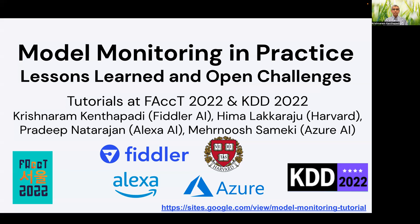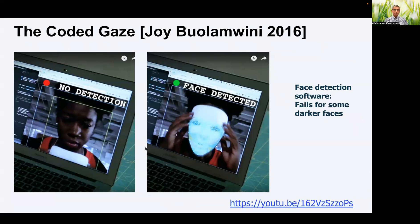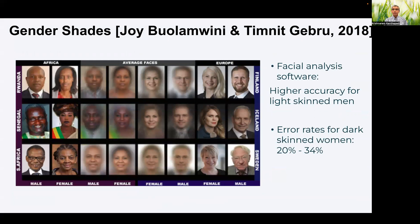Let's start with understanding why we need machine learning model monitoring. Over the last several years, we have observed a variety of instances where machine learning models have not behaved as they were intended. For instance, back in around 2016, Joy Buolamwini observed that facial detection softwares often did not detect her own face. These softwares tended to work well for light-skinned faces, but often failed for darker faces. Perhaps this motivated Joy to collaborate with Timnit Gebru on the famous Gender Shades work, which showed that commercially available facial analysis software had nearly zero error rates for light-skinned men, but had very high error rates for dark-skinned women.